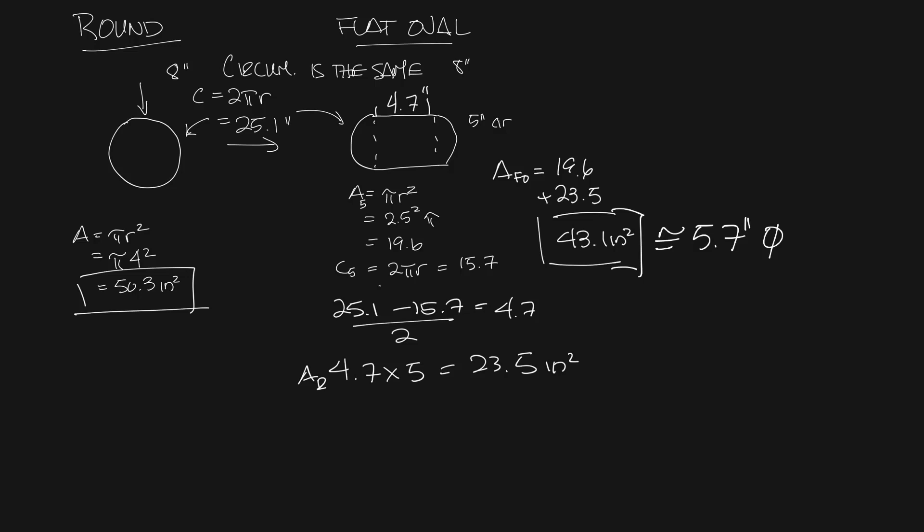So let's look at the velocity inside both of these. So velocity equals CFM divided by area. So let's say we have 700 CFM.